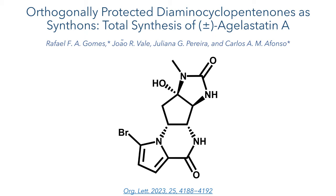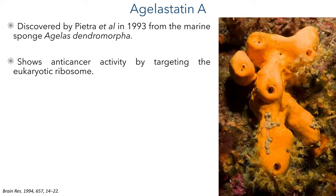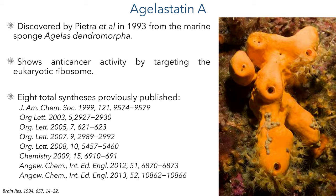This compound was first discovered by Pietra et al. in 1993 from the marine sponge Agelas dendromorpha. It immediately attracted a lot of attention as it shows anti-cancer activity in the nanomolar range. It has been shown that this anti-cancer activity comes from targeting the eukaryotic ribosome. Due to its medicinal properties, it gained a lot of attention from the synthetic community and was first synthesised by the Wiener group in 1999.